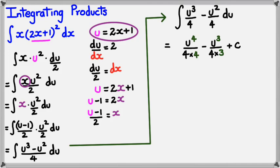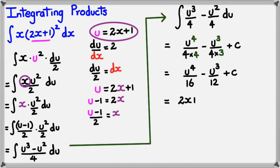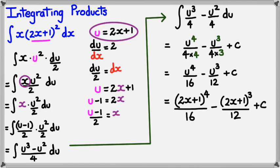Plus c. Simplifying, I get u⁴/16 minus u³/12 plus c. Now I'm not done yet because I still have u in the equation and I need it in terms of x. Since u equals 2x + 1, I substitute back to get (2x + 1)⁴ divided by 16 minus (2x + 1)³ divided by 12 plus c.